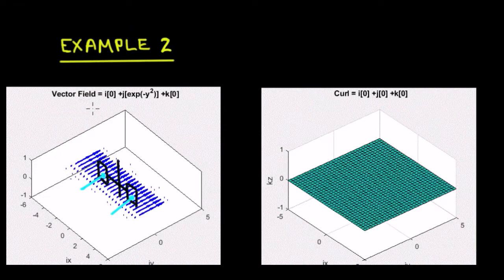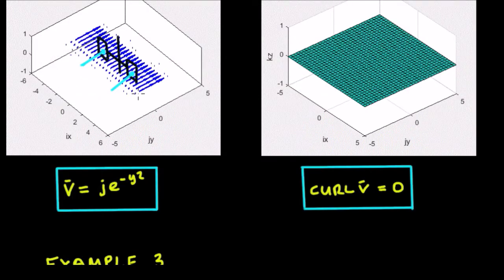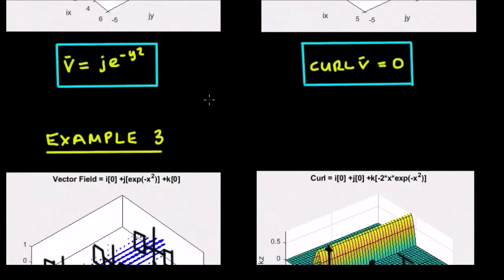Moving on to example number two: this vector field is given by zero in the i direction and e to the minus y squared in the j direction, with zero in the k direction. In this instance, the variation is in the y direction, but if the paddle is sitting in here, then we've got an equal amount of force on each side of the paddle. So the paddle won't move, it won't rotate, and the curl will be equal to zero - and we can see here the curl is indeed zero.